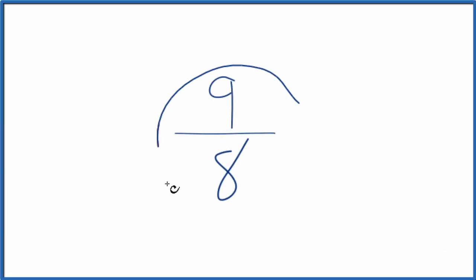Let's simplify the fraction 9 eighths. What we want to do is find another fraction that's equivalent, it has the same value as 9 over 8, just that we've simplified or reduced it down to lowest terms.